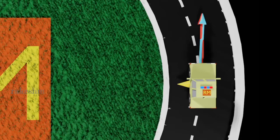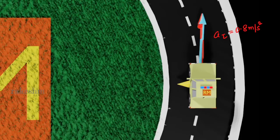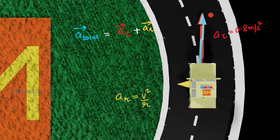Let us understand why the car actually skids. I am marking the accelerations of the car using arrows. The red arrow represents the tangential acceleration of the car. The yellow arrow represents the radial acceleration of the car. The blue arrow represents the total acceleration, which equals the tangential acceleration plus the radial acceleration.